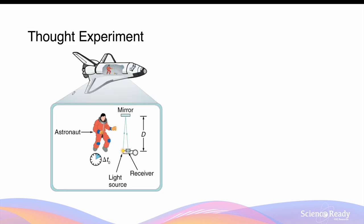The effect of time dilation can be understood by first imagining a thought experiment. Imagine we have a spaceship travelling at a fraction of the speed of light. Inside the spaceship, there's a light source that shoots a beam of light towards a mirror on the ceiling, and this mirror will then reflect the light beam onto a receiver right next to the light source. The time interval between when the light leaves the source and when it reaches the receiver can be measured by a clock on the spaceship, and according to the astronaut, this clock reads t0. The distance between the mirror and the light source is capital D.